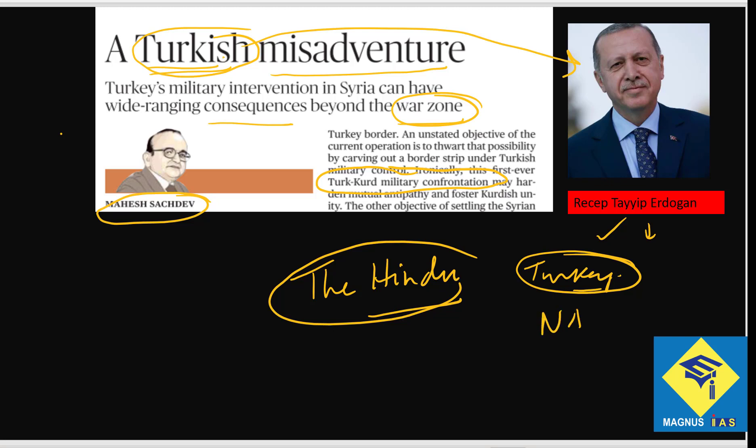Turkey is a member of NATO, and the USA wants to exit this imbroglio, but the Kurds remain. The problem is clearly between Erdogan and the Kurdish people. Turkish military intervention can have wide-ranging consequences. If the USA suddenly leaves, there will be far greater problems, as the Kurds are left without support from any country.